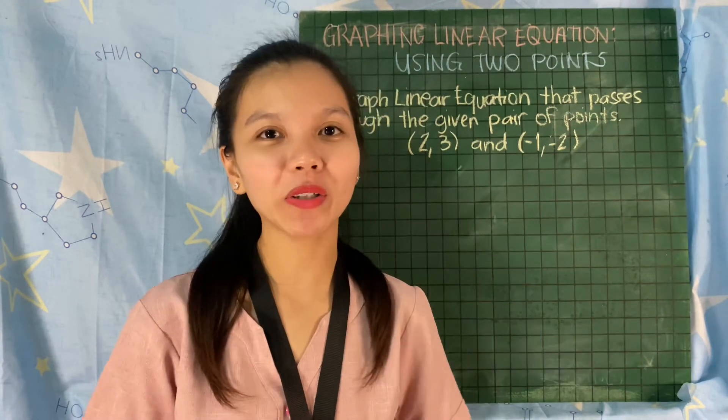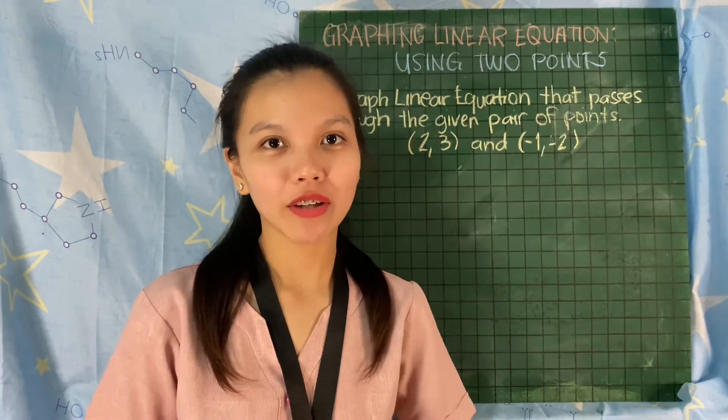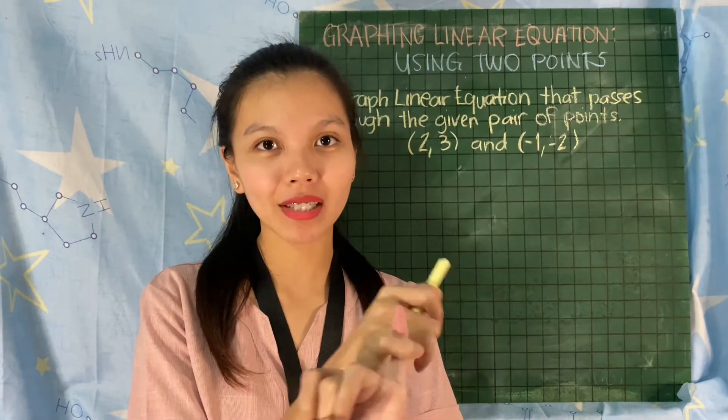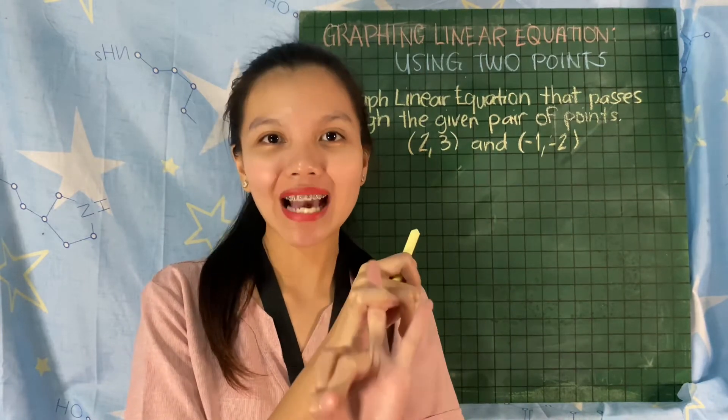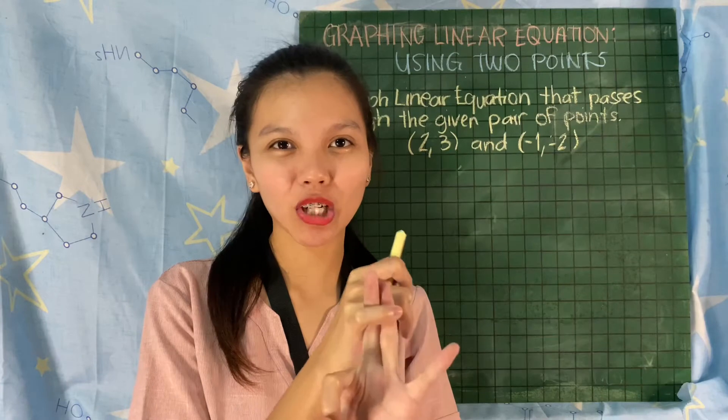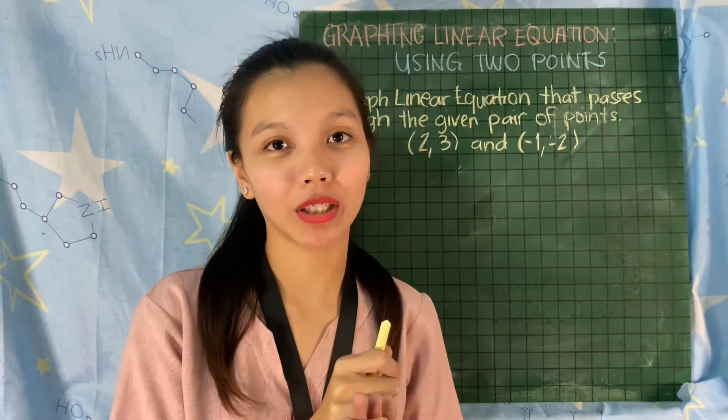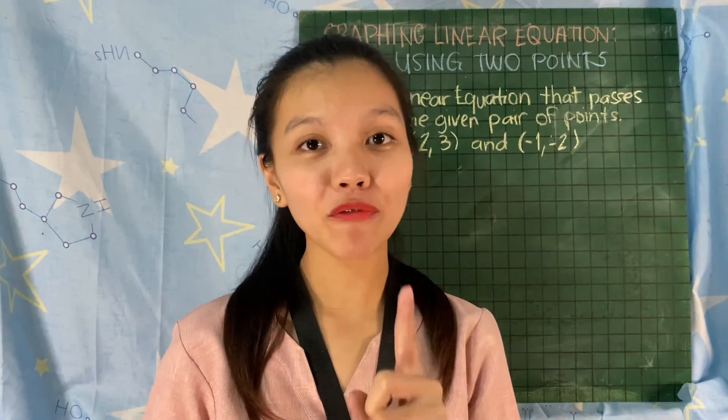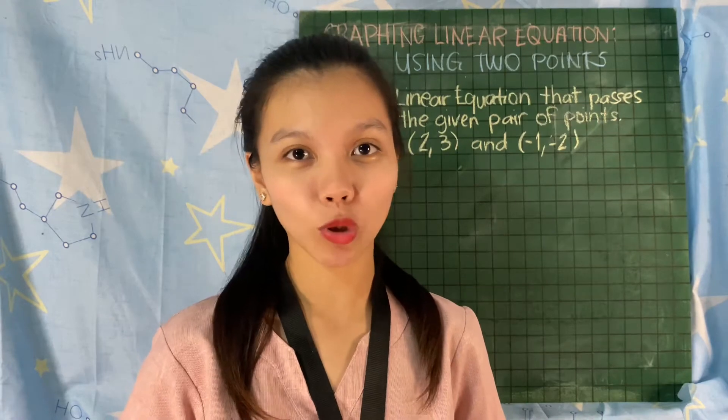We have three methods in order to graph a linear equation. The first one is using two points, the second one is using x and y intercepts, and the third one is using a slope and a point. We are going to discuss the first one, which is using two points.